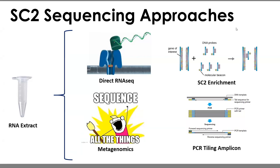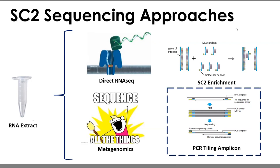The two methodologies most appropriate for state labs to consider are target enrichment-based protocols, where genes of interest are identified and clonal amplification happens via a pull-down using DNA probes specific to the SARS-CoV-2 RNA virus, and PCR tiling. The ARTIC network has identified primer sites throughout the entirety of the SC2 genome allowing amplification across the entire virus. The SC2 enrichment approach is also in active development with Illumina's Nextflex kit, though that hasn't been released yet. My talk will focus on the ARTIC PCR tiling amplicon approach.